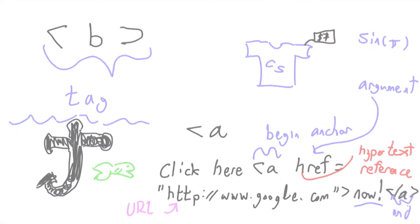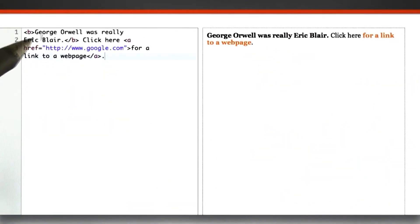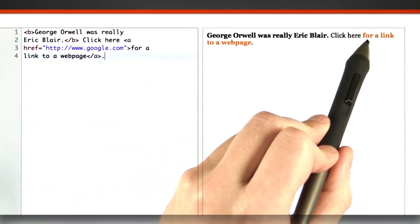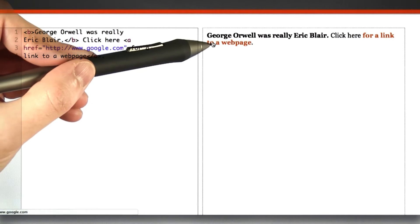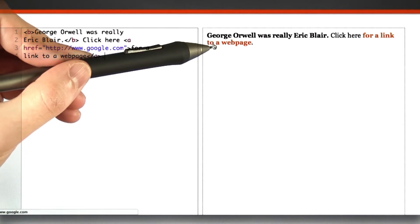Let's see how this plays out. So here, I've left the old Eric Blair is really George Orwell text, but I've added a new sentence. Click here for a link to a web page. And right after the anchor starts, the text is rendered in a slightly different color. And if we were to click on it, you can potentially see down in the lower left that it goes to google.com.